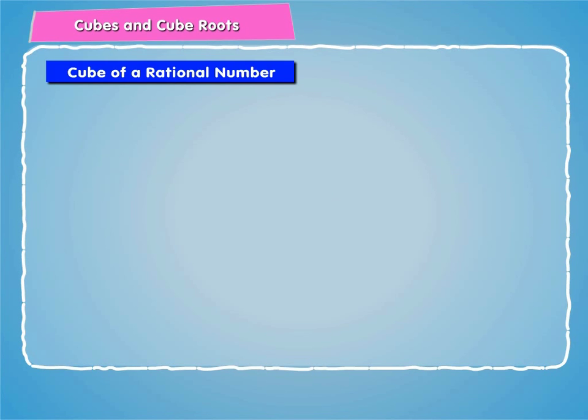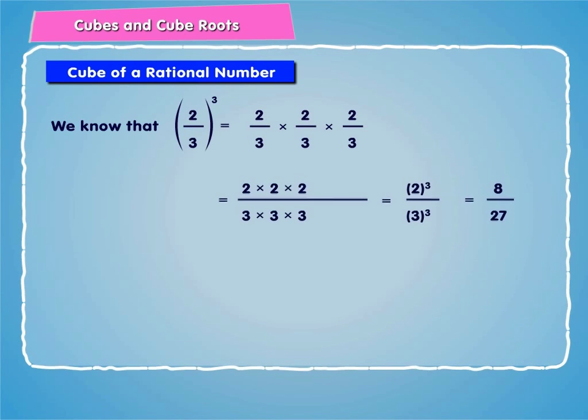Let us now learn about the cube of a rational number. As we know that 2 by 3 whole cube is equal to 2 by 3 into 2 by 3 into 2 by 3, is equal to 2 into 2 into 2 by 3 into 3 into 3, is equal to 2 cube by 3 cube, is equal to 8 by 27.